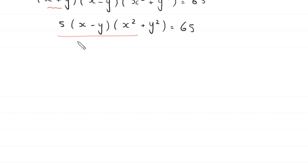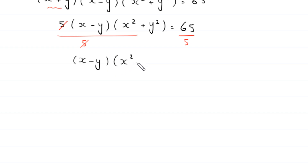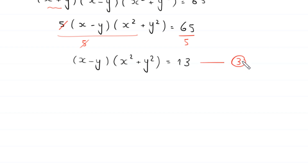We divide both sides by 5, so this 5 cancels and we are left with (x minus y) times (x squared plus y squared) equals 13. Let's call this equation number 3.